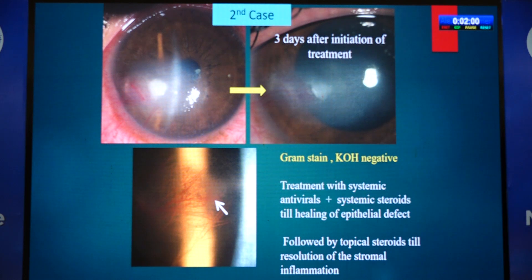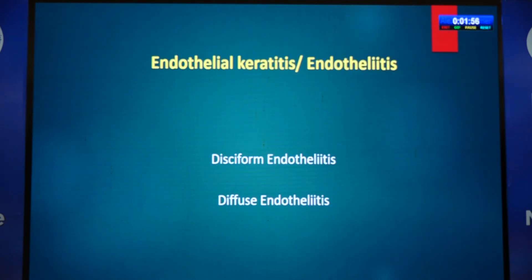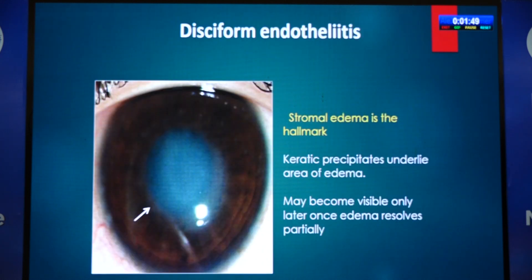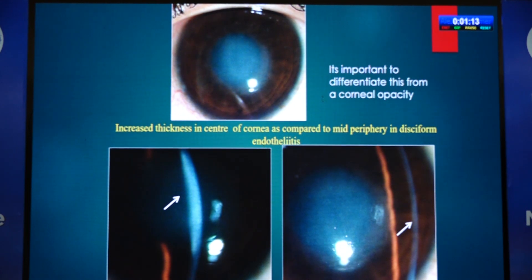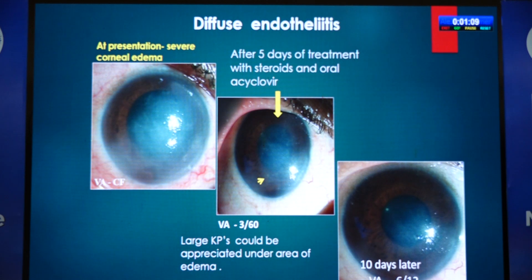Endothelial keratitis or endotheliitis may be disciform, diffuse, or linear. A 17-year-old girl was referred for a corneal opacity — but on slit lamp examination the central thickness was greater than peripheral thickness, indicating endotheliitis. After starting steroids, keratic precipitates become visible below. Another patient — a one-eyed lady — had sudden onset diffuse endotheliitis; after steroids and antivirals, KPs appeared and 10 days later the cornea was much clearer.